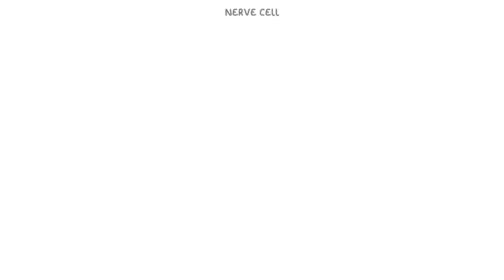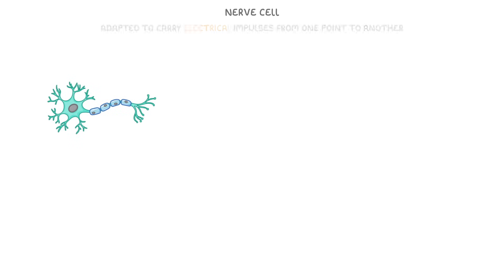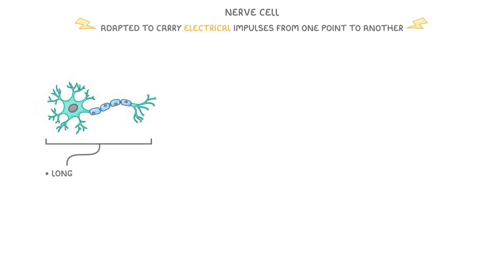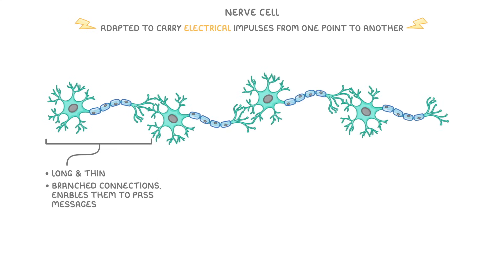Let's start with an individual neuron, which we can also call a nerve cell. There are actually loads of different types of neurons, but they all look something like this, because they are adapted to carry electrical impulses from one point to another. The main things to notice are that they're long, they're thin, and they have lots of branch connections at either end, which enables them to pass messages onto other nerve cells. Effectively, they're just a biological version of a wire, carrying a small current.